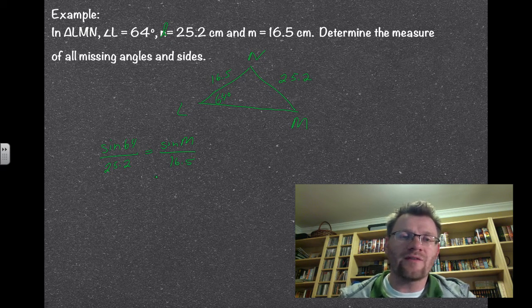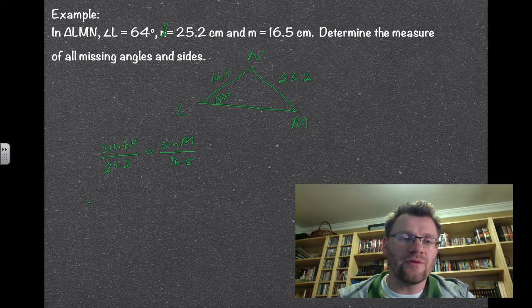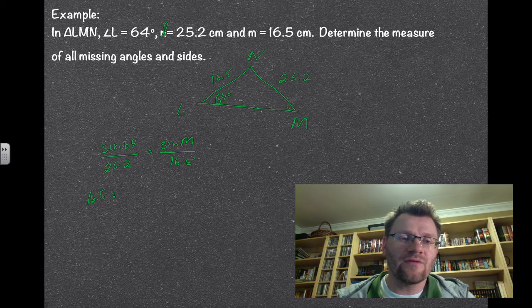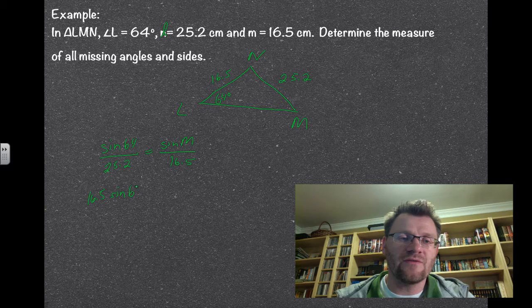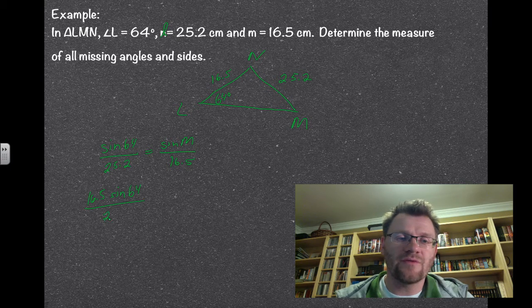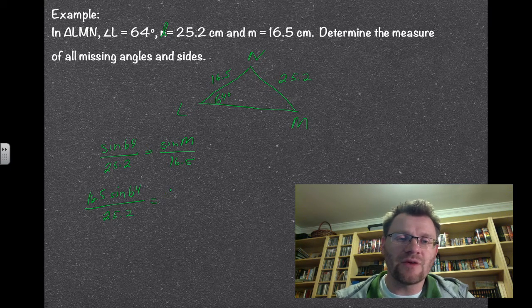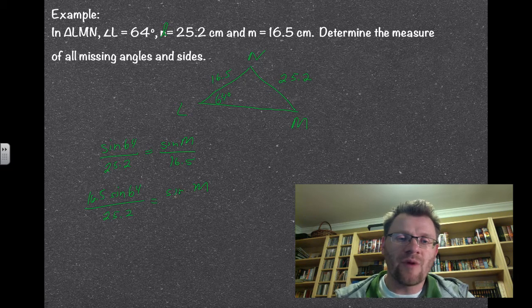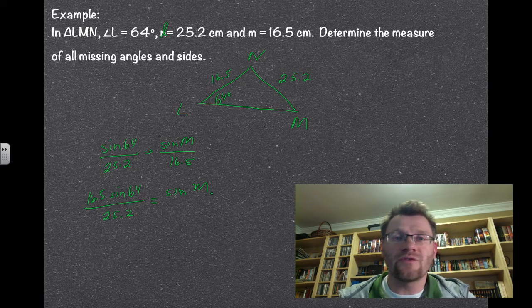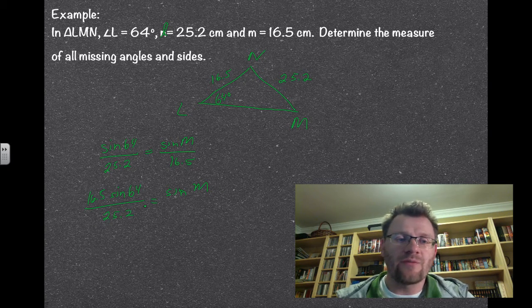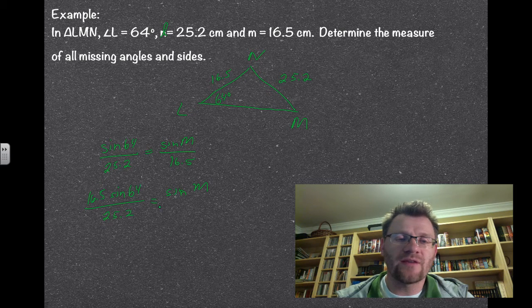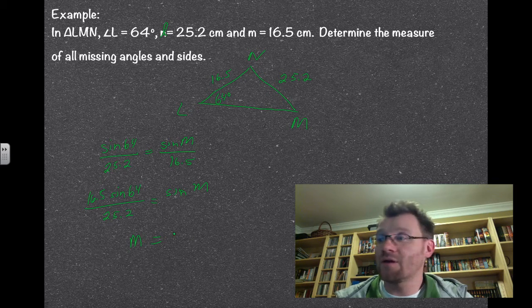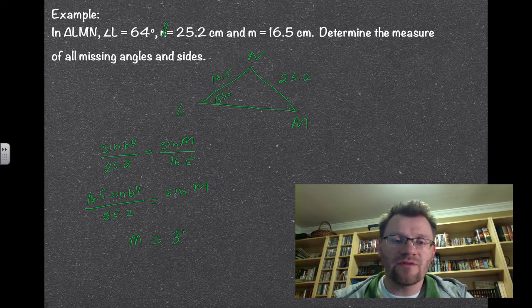If I want to isolate sine m, I'm going to multiply this 16.5 up over here. So I get 16.5 sine 64 divided by 25.2 equals sine m. Remember that when you're looking for an angle, you need to go second function sine. So I punch this into my calculator, take second function sine of that, and I get m equaling 36 degrees.